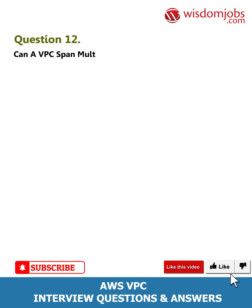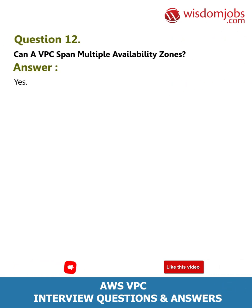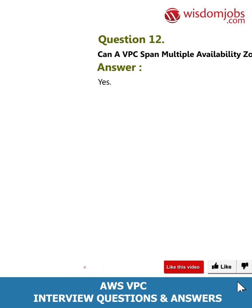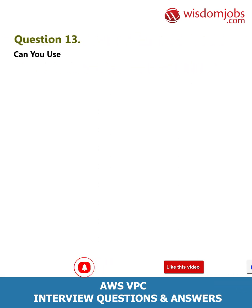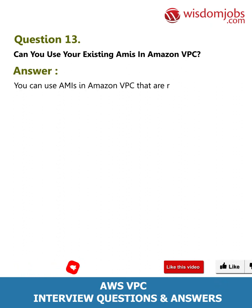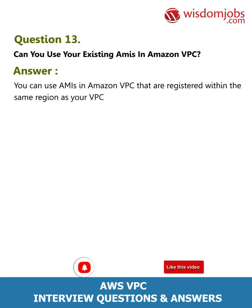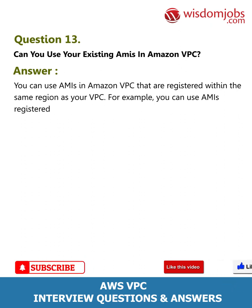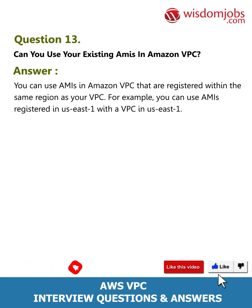Question 12: Can a VPC span multiple availability zones? Answer: Yes. Question 13: Can you use your existing AMIs in Amazon VPC? Answer: You can use AMIs in Amazon VPC that are registered within the same region as your VPC. For example, you can use AMIs registered in US-East-1 with a VPC in US-East-1.